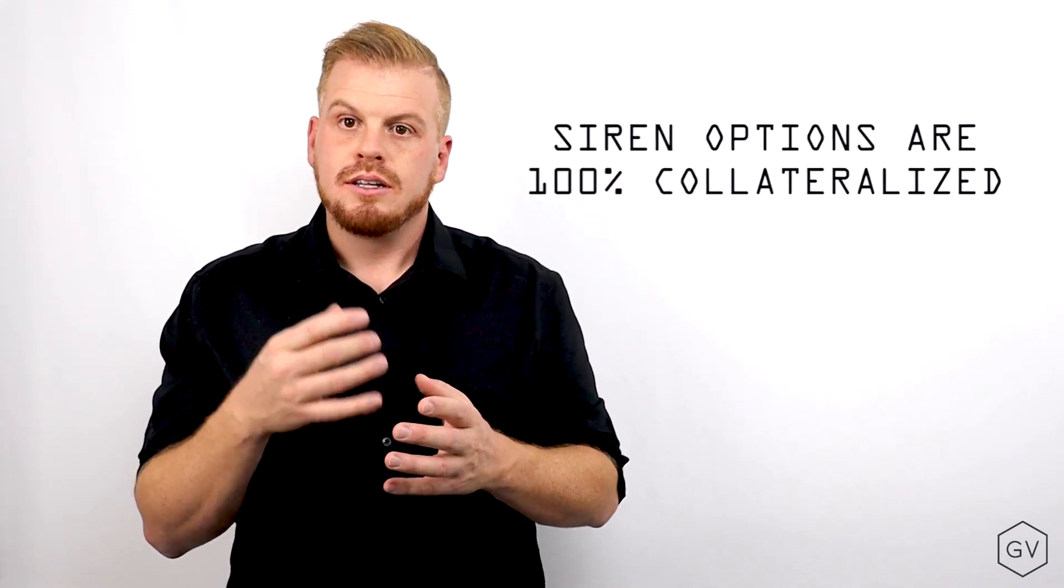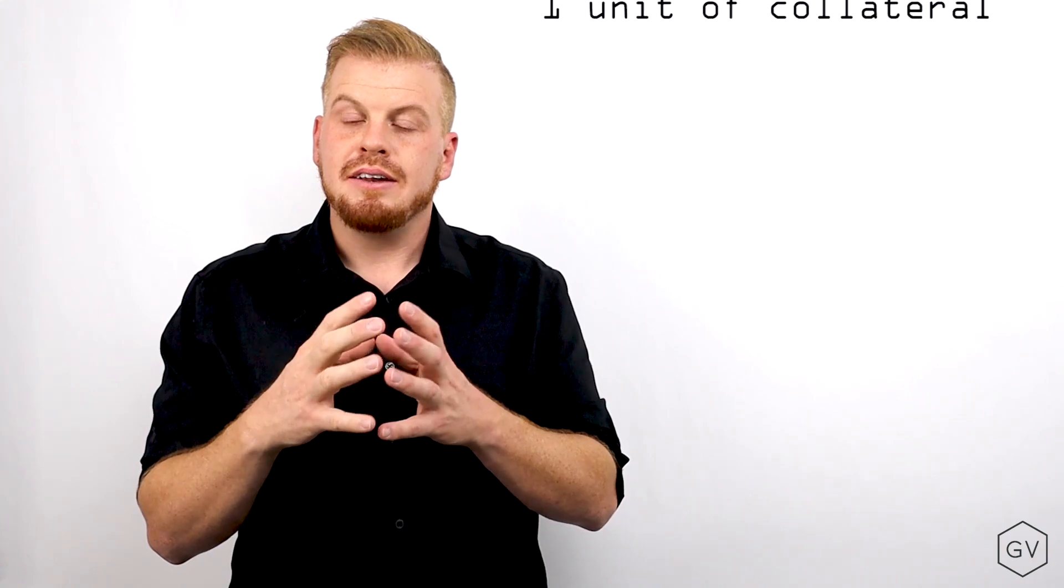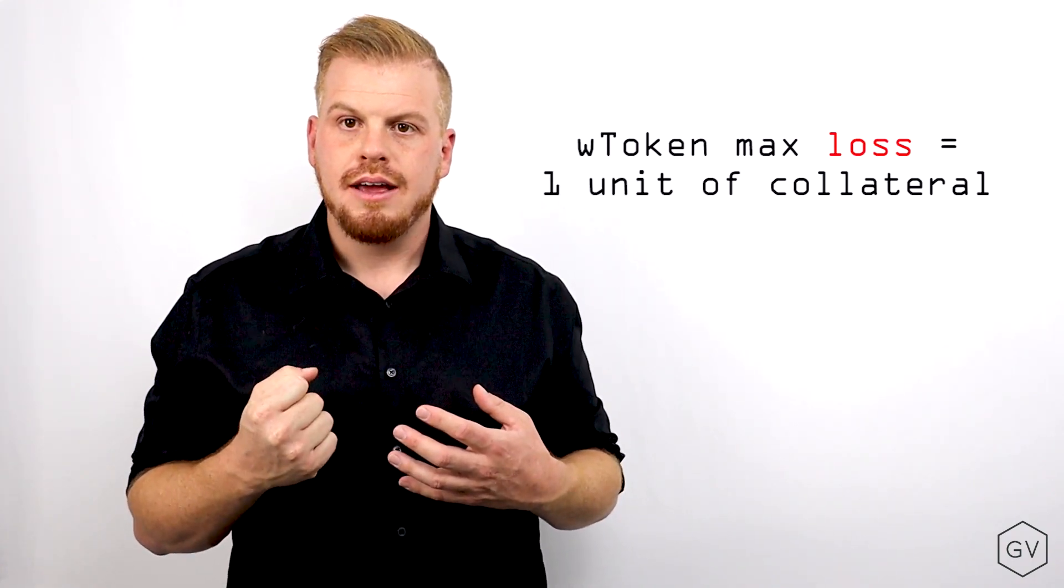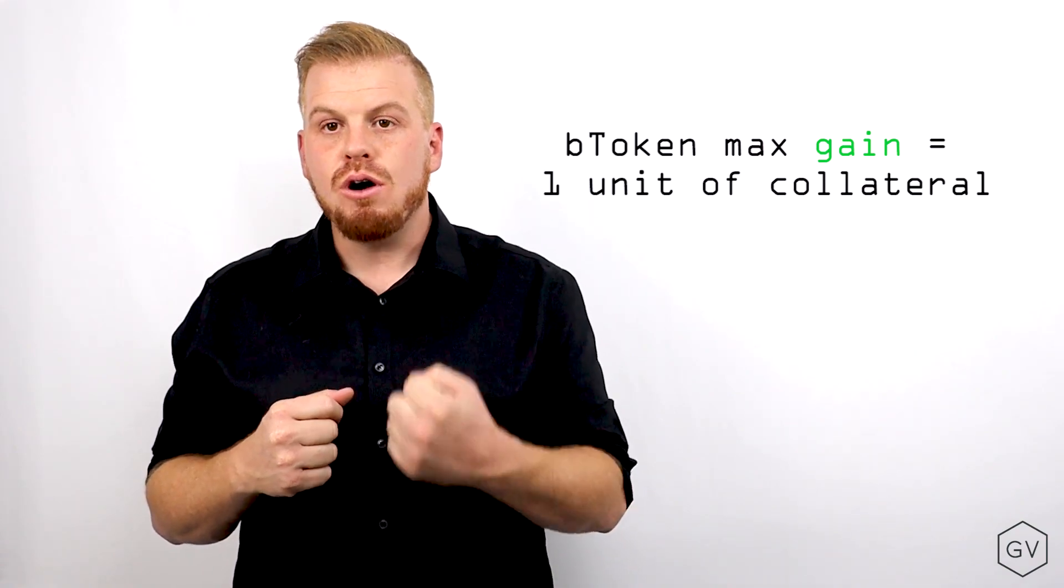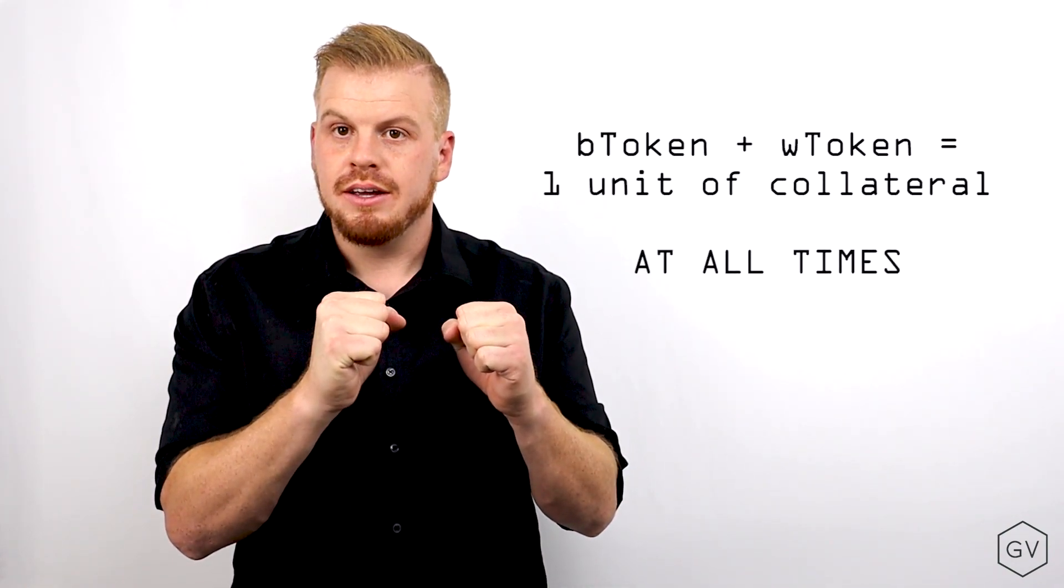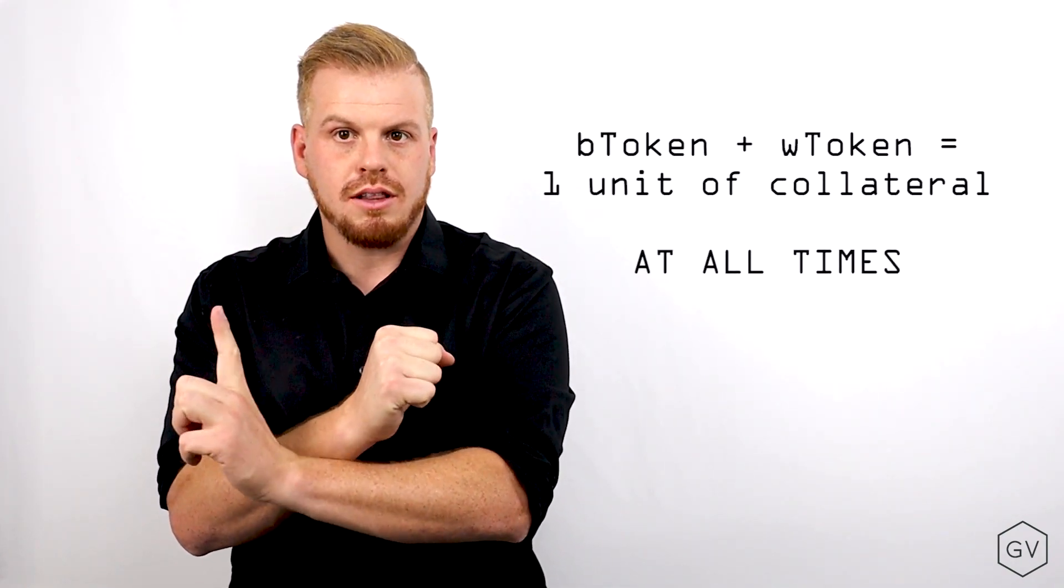Because we're dealing with fully collateralized options, the W token can have no greater loss than one unit of collateral, and the buy token can have no greater gain than one unit of collateral. Together, the buy token plus the W token equal one unit of collateral.